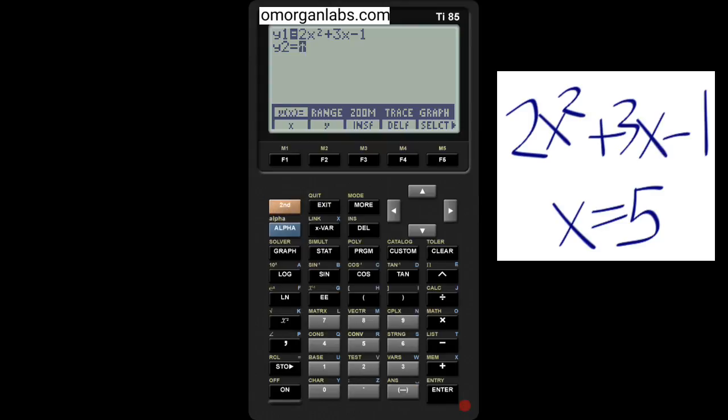Now what we have to do is we have to tell it to use the y1 equation and plug in 5. Second calc, eval f function, and then we spell it out.